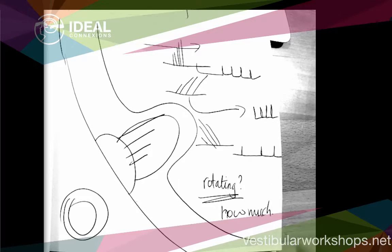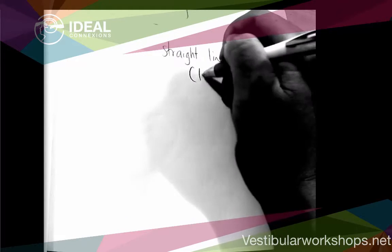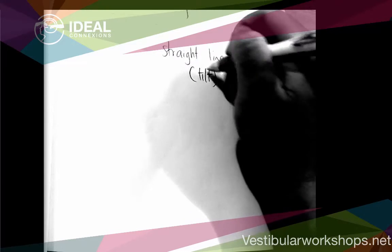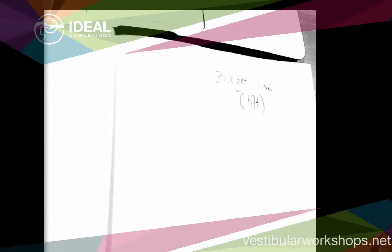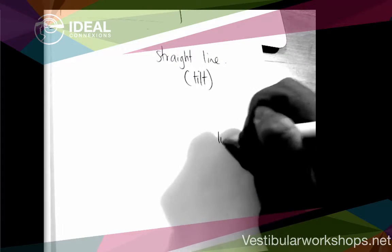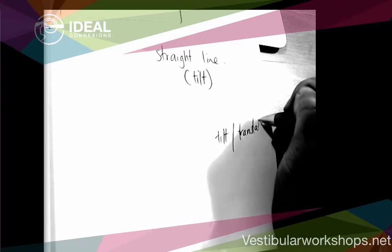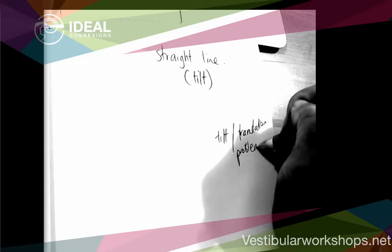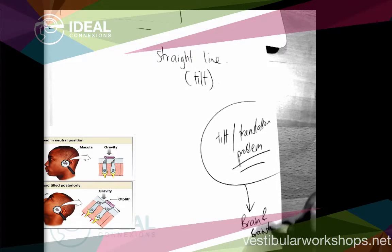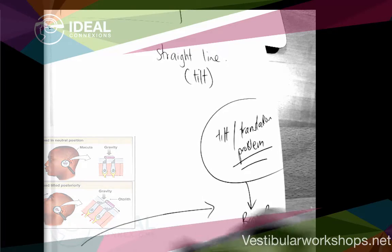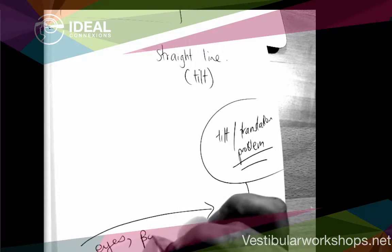The second type of signal is am I moving in a straight line, and this one's also tilt. Because the very nature of this receptor means that if you move it one direction or the other, it'll do the same thing as if it's tilting, and that's where you have something that's called the tilt-translation problem. All that means later is that the brain fixes that—the brainstem needs more information, and that's part of the reason that you need eyes and body as well.